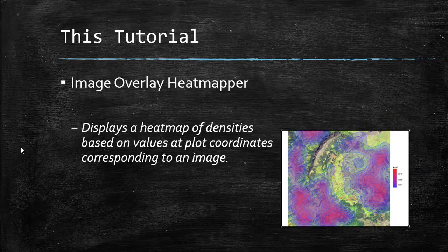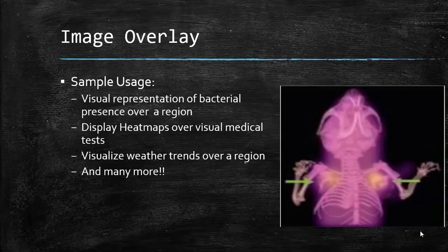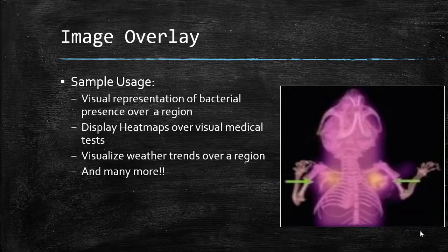This function displays a heatmap over an image and can be used for a wide variety of applications. For example, it can be used to create a custom heatmap of measured bacterial presence or abundance in different parts of the body, or to overlay x-rays over CT scans and other such tests. It can even be used to find weather trends over a region.